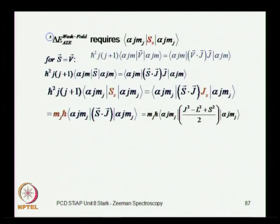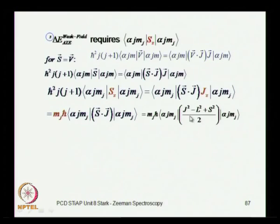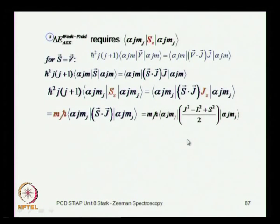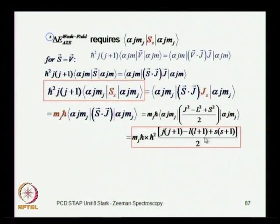The operator S·J equals (J²-L²+S²)/2. You get this by taking the square of S+L=J and dotting out S+L with S+L. Now, this state is an eigenstate of these operators, so the eigenvalues give ħ² times [J(J+1) - L(L+1) + S(S+1)]/2. You get numbers on the right side, and the matrix element of SZ is now obtained completely in terms of these quantum numbers.